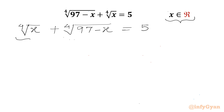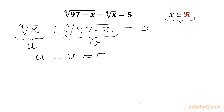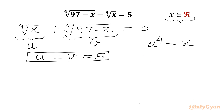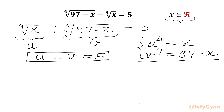Let us consider substitutions. 4th root of x we will call u, and 4th root of (97 minus x) let us say it is v. So the first equation we can write is u plus v equals 5. Now u to the power 4 equals x, and v to the power 4 equals 97 minus x. Adding these two equations gives u⁴ plus v⁴ equals 97.